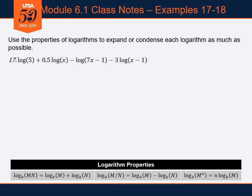One more like that. I realize I've accidentally labeled this one as number 17 as well — it's actually number 18. This is number 18. The problem reads: log of 5 plus 0.5 log of x minus log of (7x minus 1) minus 3 log of (x minus 1). I'm doing the same thing as example 17 — using the properties of logarithms listed at the bottom of the screen to combine all of these into a single logarithm.